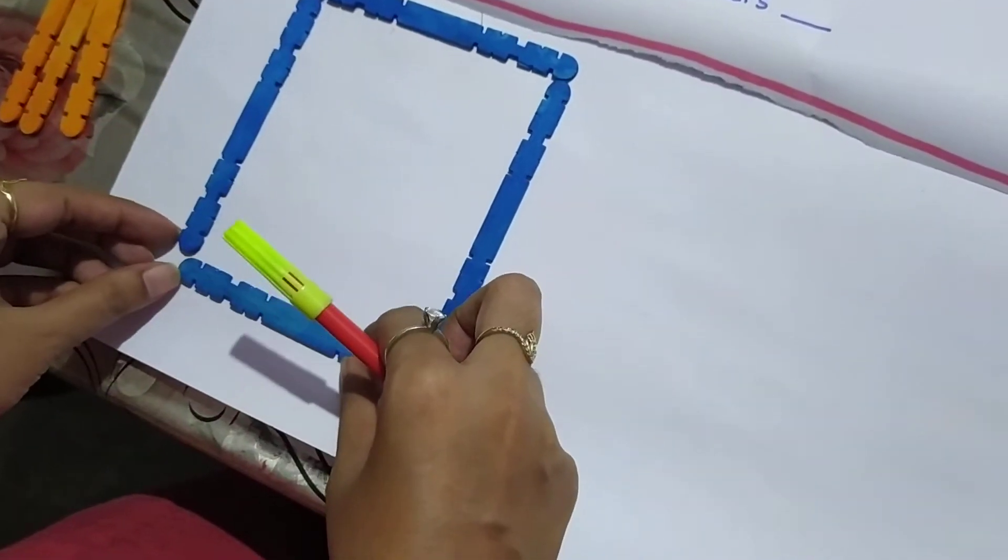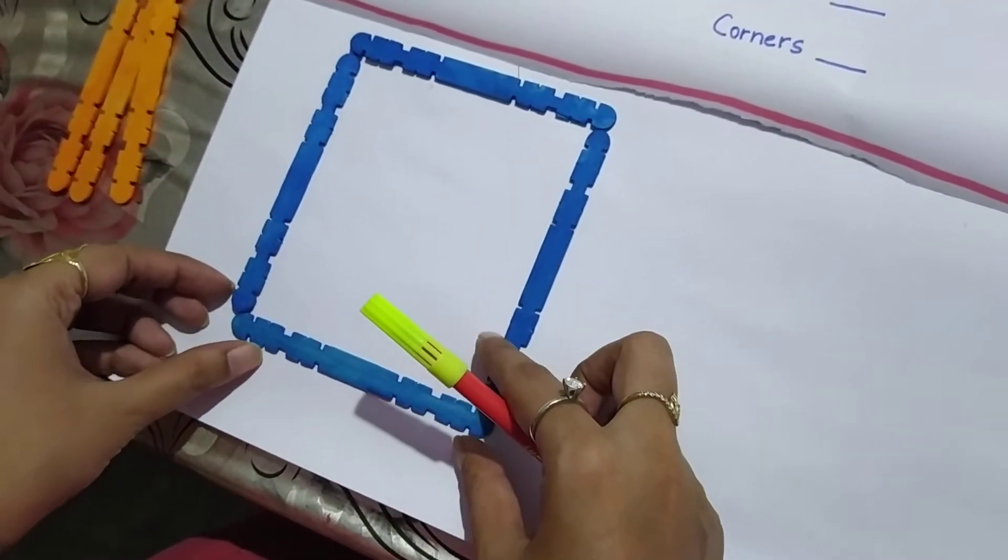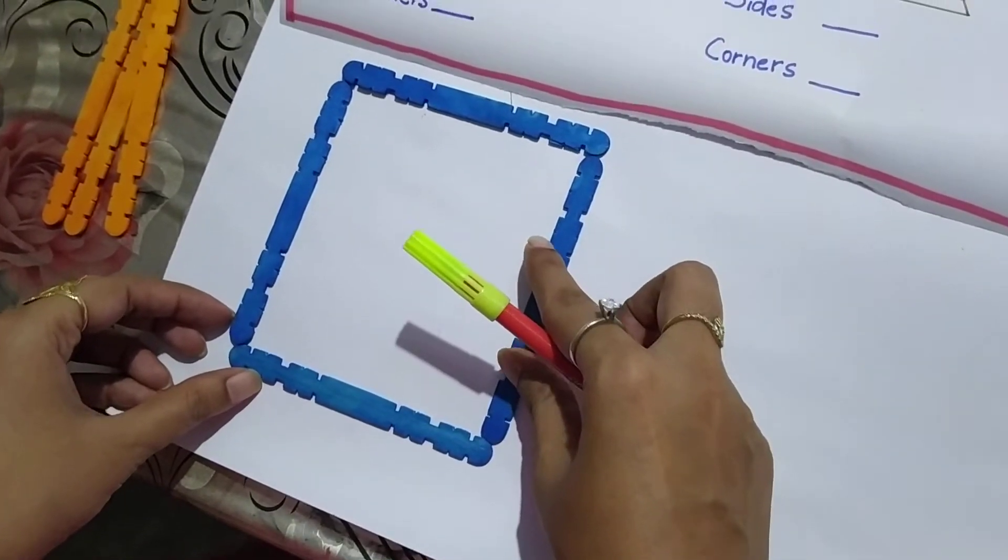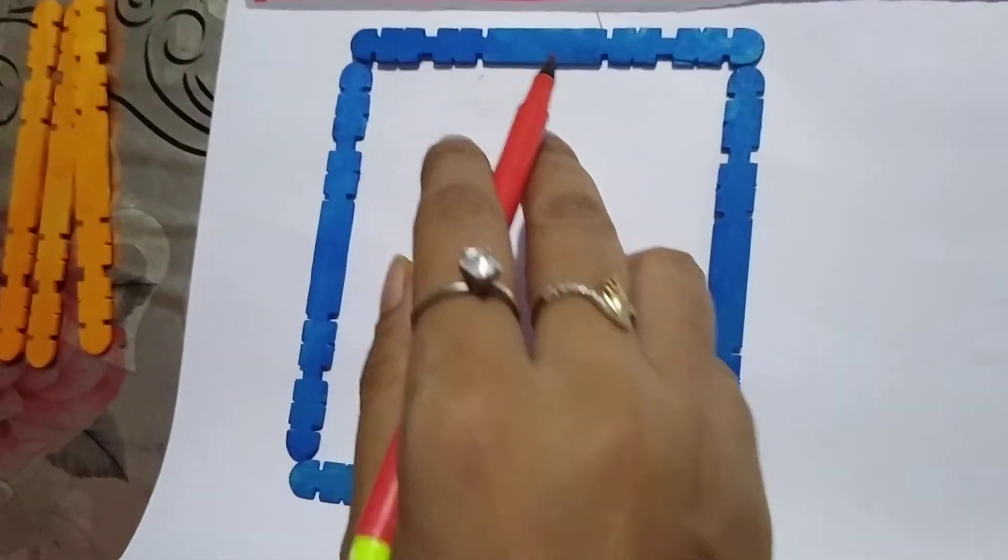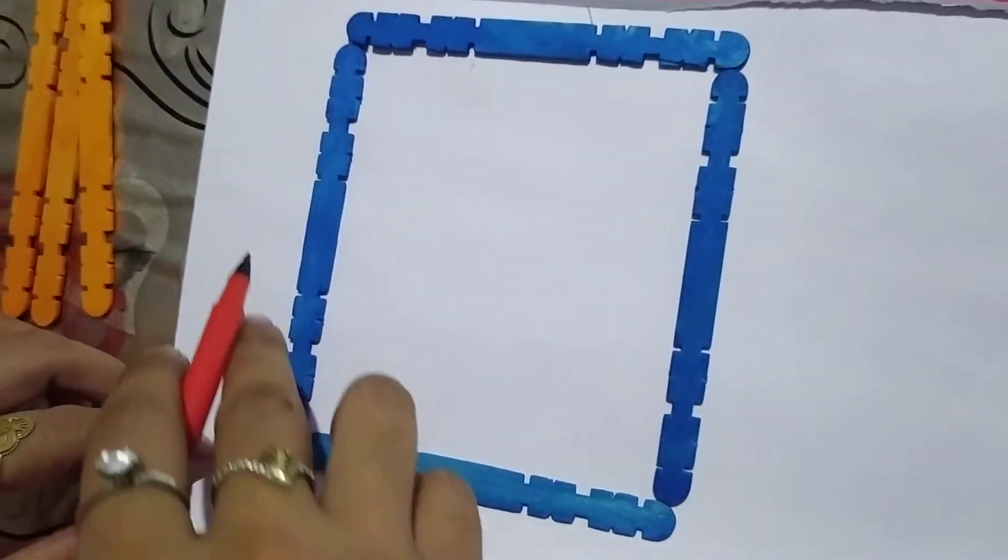So here we will see how the shape is made. This is a square shape. So how many straight lines are there? Let us count. One, two, three and four.